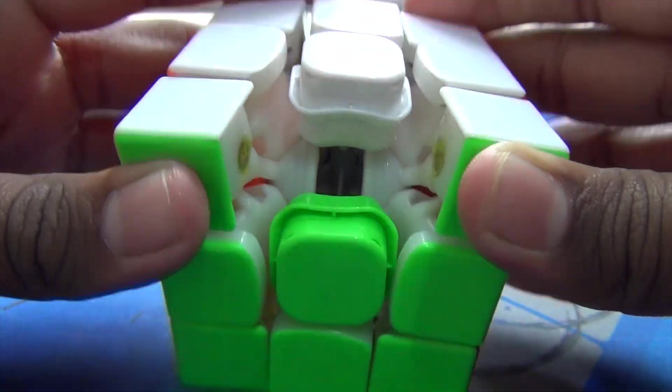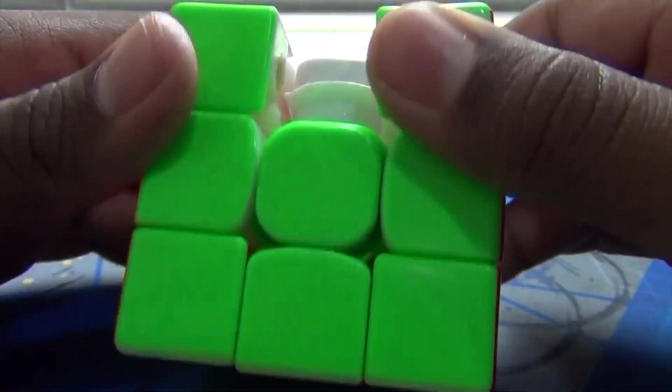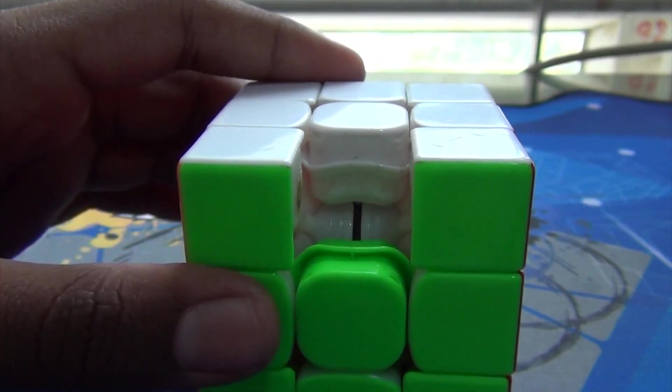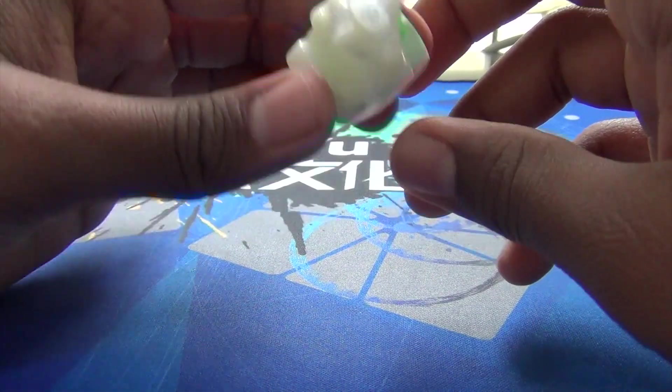So the Tengyun has a pretty nice core with large lips which prevents popping but I did experience a few pops on looser tension so you have to tighten it.